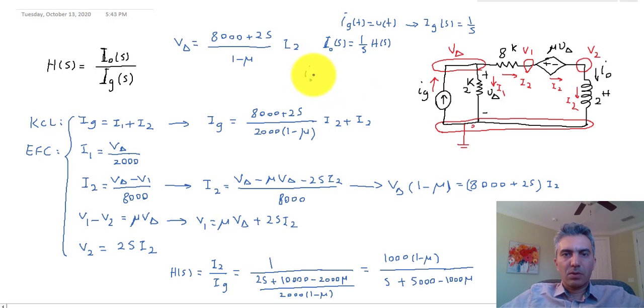And then I_out(t) would be simply the inverse Laplace transform of 1 over s times H(s). Now you can change I_G(t) to anything else, let's say sine, cosine, exponential function, anything, and then you calculate I_G(s) and repeat the same process.